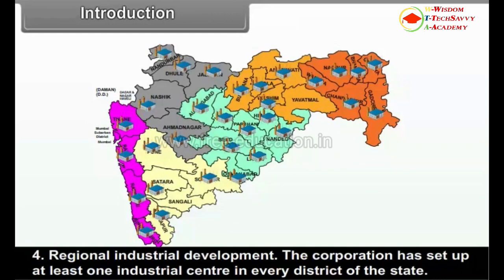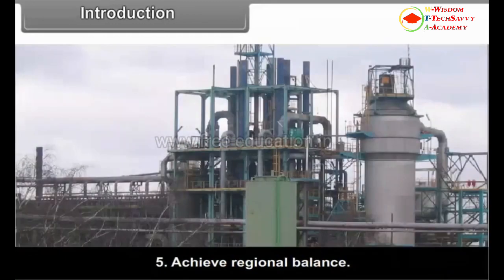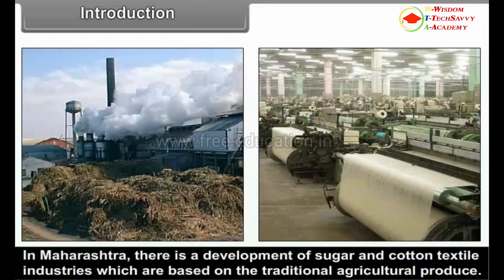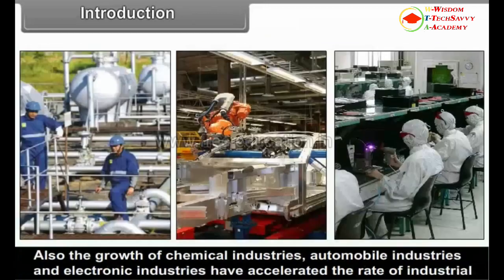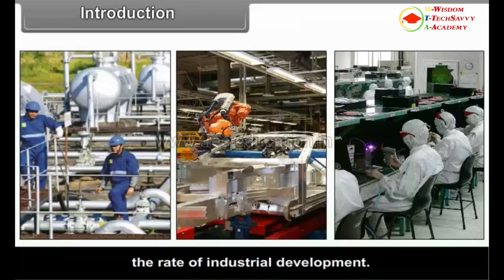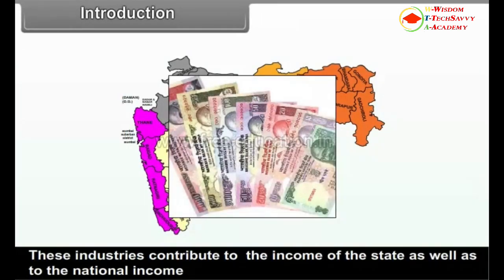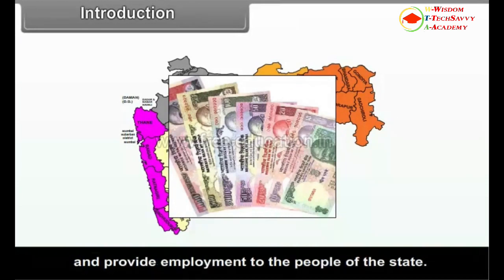The corporation has set up at least one industrial center in every district of the state to achieve regional balance. In Maharashtra, there is development of sugar and cotton textile industries based on traditional agricultural produce. The growth of chemical, automobile, and electronic industries has accelerated the rate of industrial development. These industries contribute to the income of the state as well as the national income, and provide employment to the people of the state.